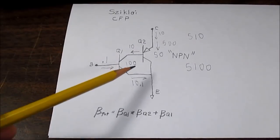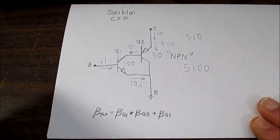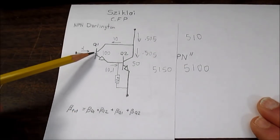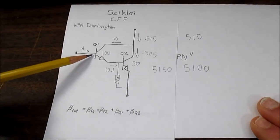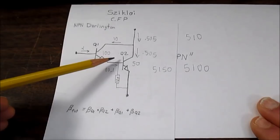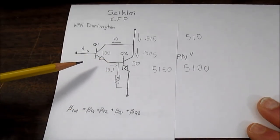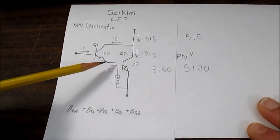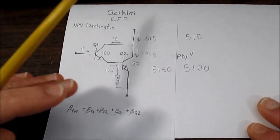So let's take a look at some interesting characteristics of the complementary feedback pair. If you remember with the Darlington circuit we had two base emitter junctions. So we had to put 1.3 volts on the base to get any current to flow through it to turn the circuit on.